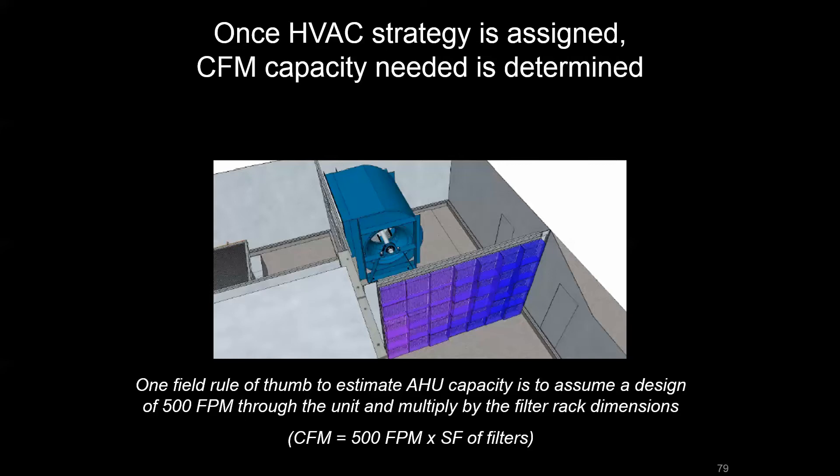Once the overall HVAC strategy has been determined, another way we could look at these units is the scale — how big are they — and we can talk in terms of CFM. You can look at something like rated CFM on nameplate data, or in as-built, or there are some field rules of thumb you can use. Assuming a designer didn't want more than 500 feet per minute through the inlet of an airside system, you can look at something with known dimensions like a filter rack and determine what that CFM most likely is.